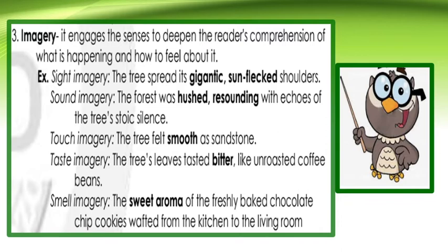Third on the list is imagery. Imagery engages the senses to deepen the reader's comprehension of what is happening and how to feel about it. For sight imagery: the tree spreads its gigantic, sun-fledged shoulders. For sound imagery: the forest was hushed, resounding with echoes of the tree's stoic silence. For touch imagery: the tree felt smooth as sandstone. For taste imagery: the tree's leaves tasted bitter, like unroasted coffee beans. And for smell imagery: the sweet aroma of freshly baked chocolate chip cookies wafted from the kitchen to the living room.